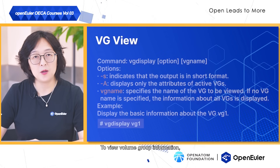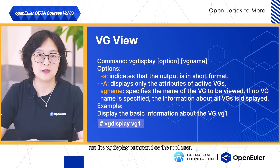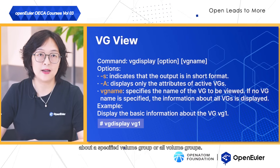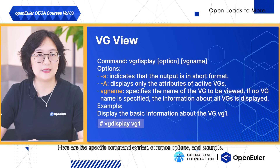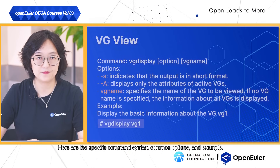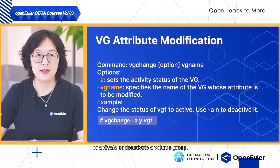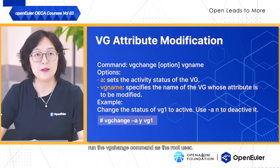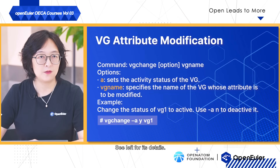To view volume group information, run the vgdisplay command as the root user. By setting the option, you can query the information about a specified volume group or all volume groups. Here are the specific command syntax, command options and example. To change the attributes of the volume group or activate or deactivate a volume group, run the vgchange command as the root user. See on the left for its details.